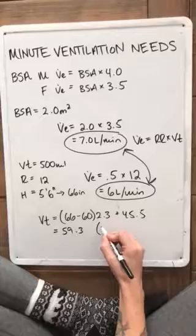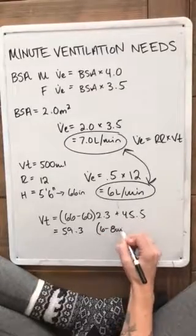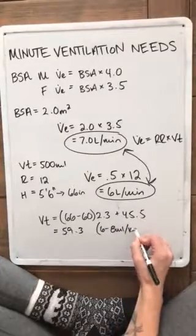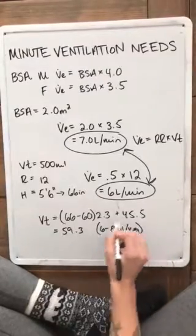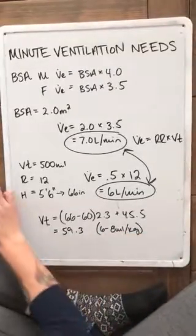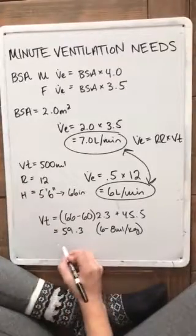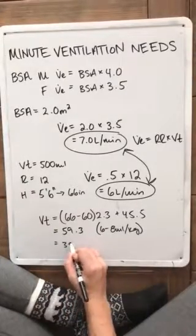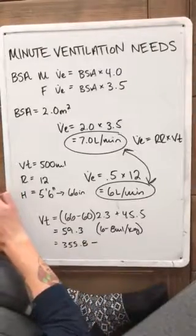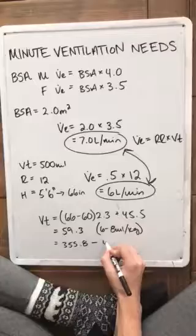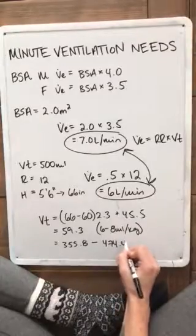Our range is 6 to 8 milliliters per kilogram. That gives us our recommended tidal volume. So the range is going to be 355.8 to 474.4.